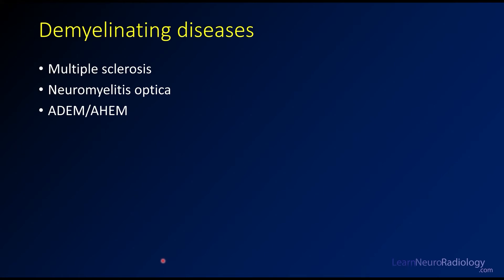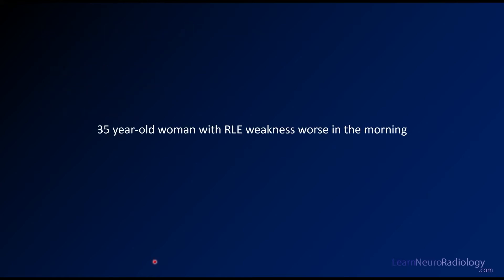We're going to talk about demyelinating diseases. The main ones are MS, NMO, and ADEM — or its variant with hemorrhage, AHEM. Each of these is going to be presented as a case. We'll see some imaging and then talk about the imaging findings and the key considerations.